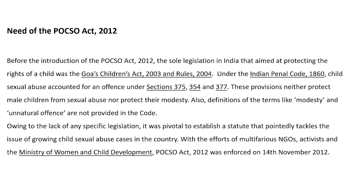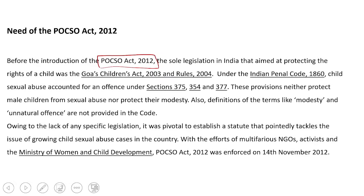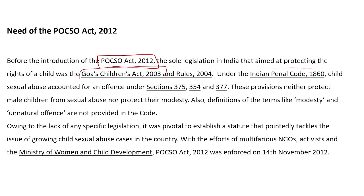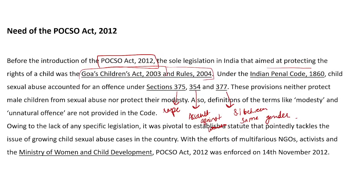The need for the POCSO Act 2012: before this act, across all of India there was only one law for the protection of children — the Goa Children's Act 2003 and its Rules 2004. The IPC had some sections regarding sexual abuse, such as Section 375 (rape), Section 374 (assault against women), and Section 377 (sexual intercourse between the same gender). Some provisions were in place to prevent sexual assault, but there was no particular act, and there was no definition of 'modesty' or 'unnatural offense' in that code.